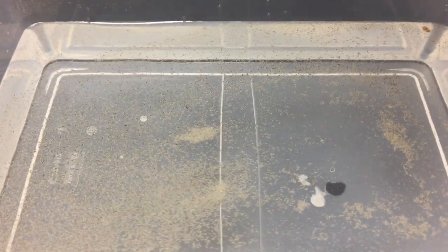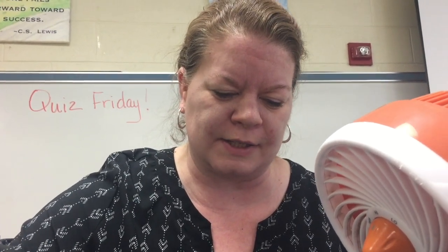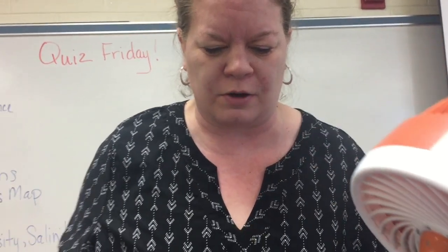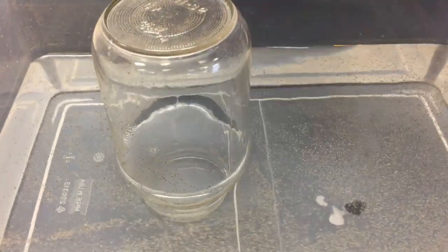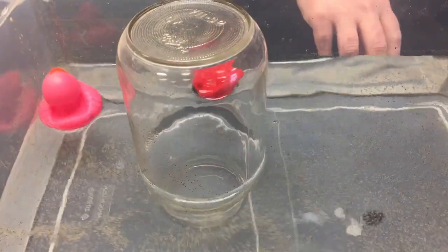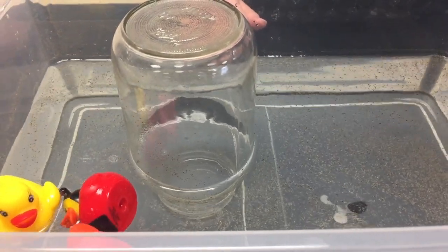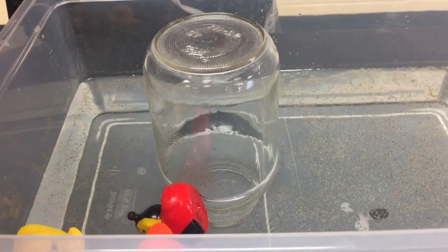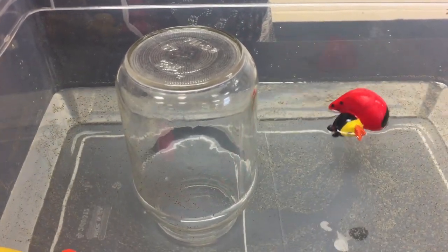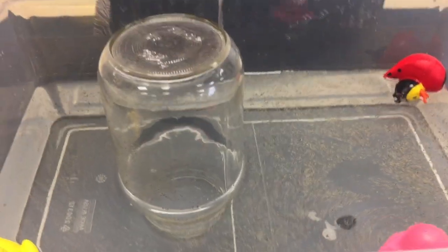Now we're going to show you how continental deflection works. That happens anytime you get a large land mass in the water, like a continent. In this case, our big jar right here is going to serve as our continent. You can see now that the pepper is moving around the continent. We'll show the little duckies in here too — that kind of helps show you continental deflection too.